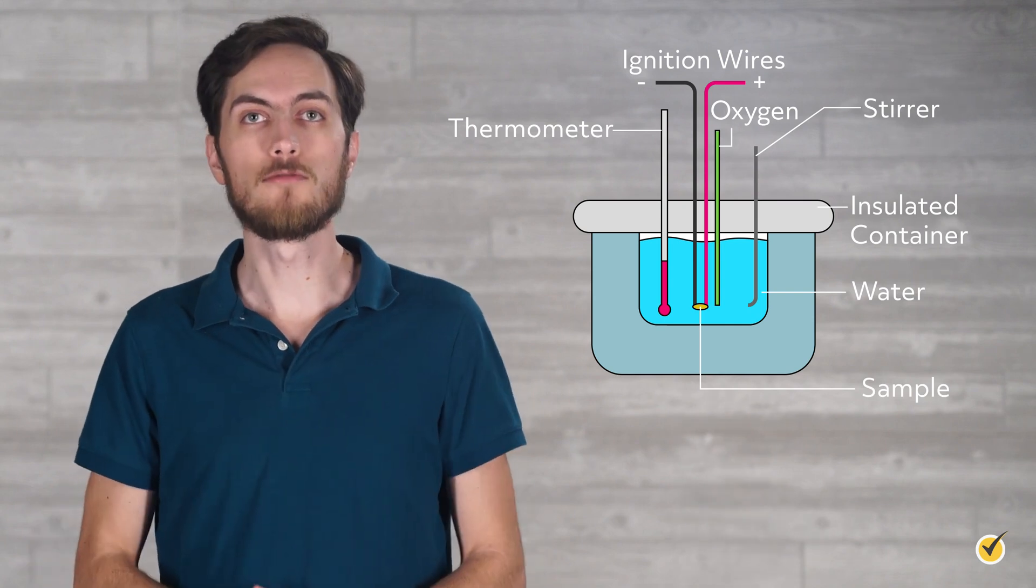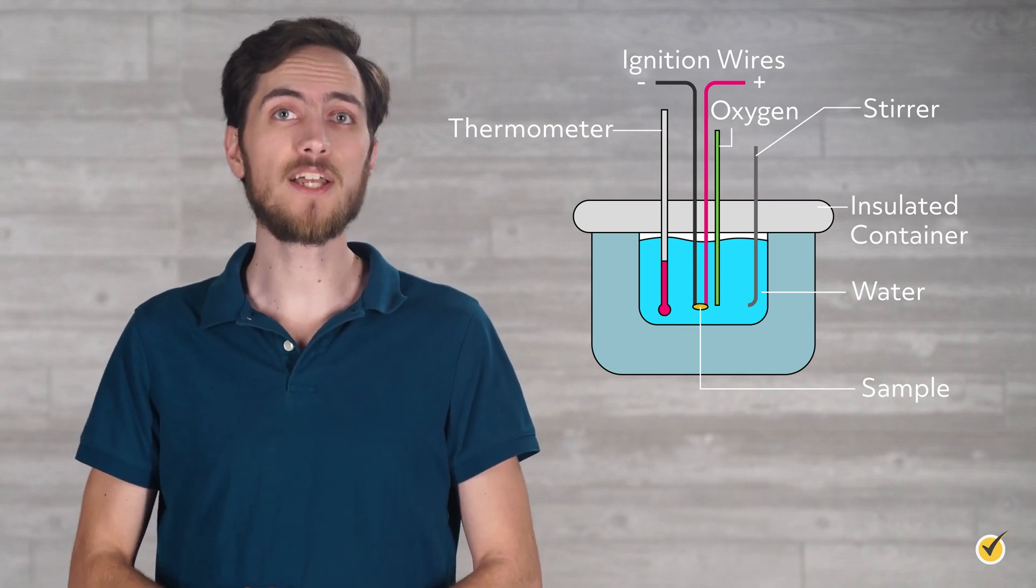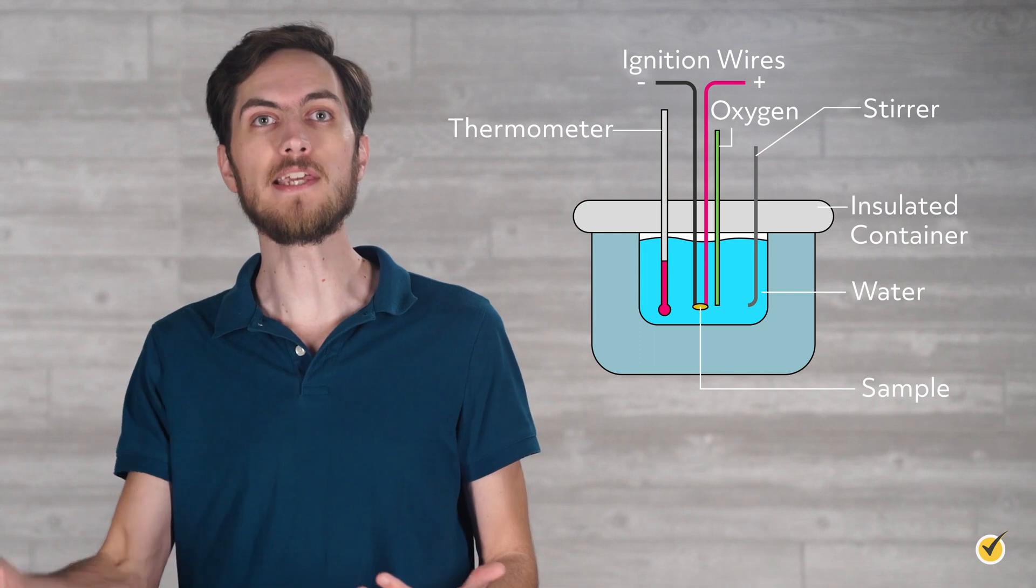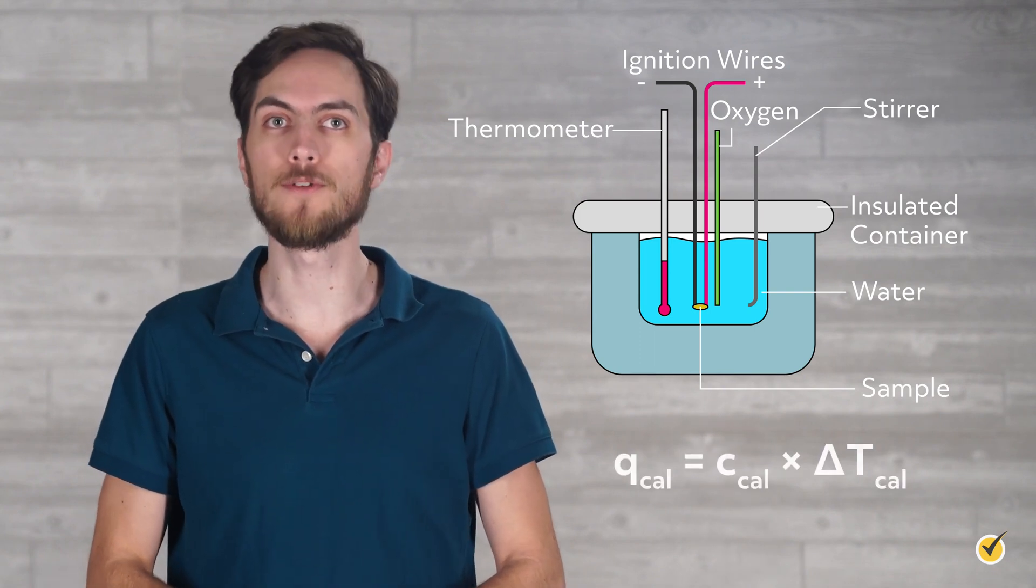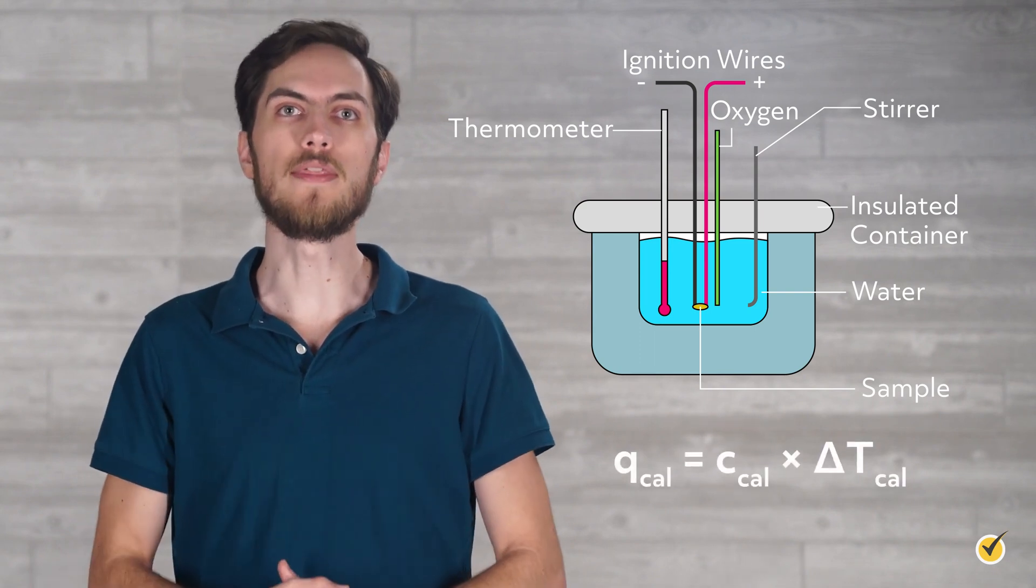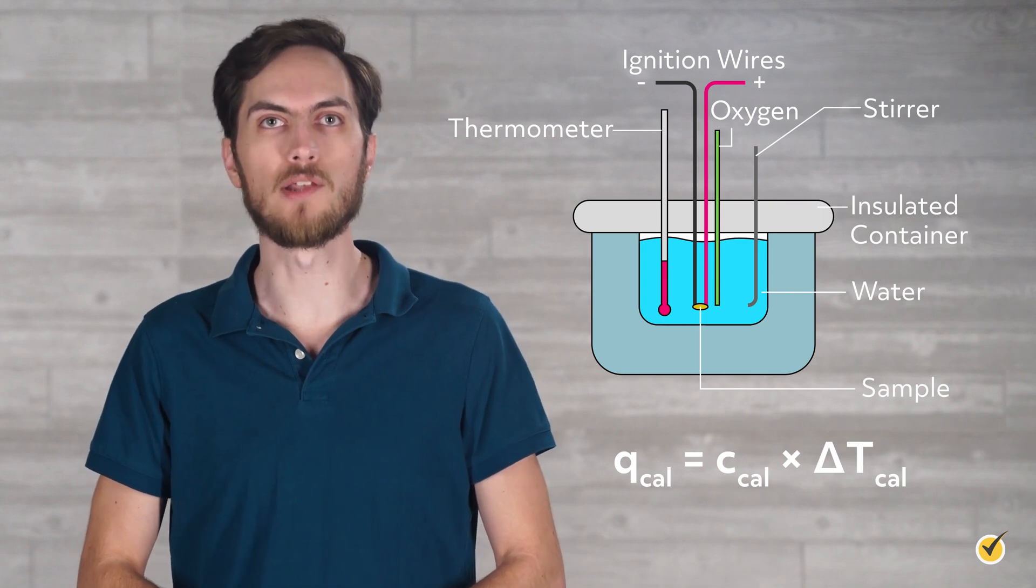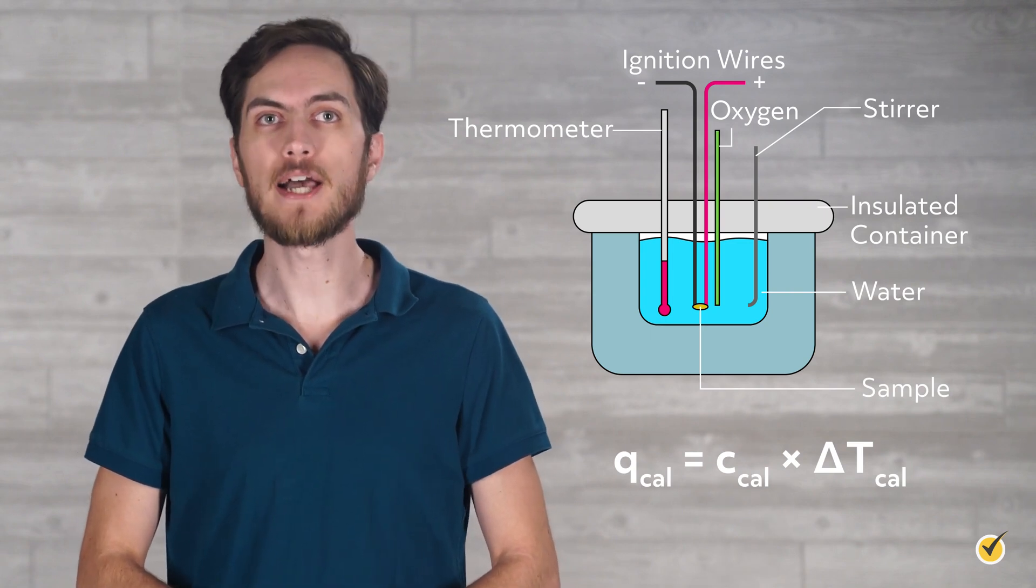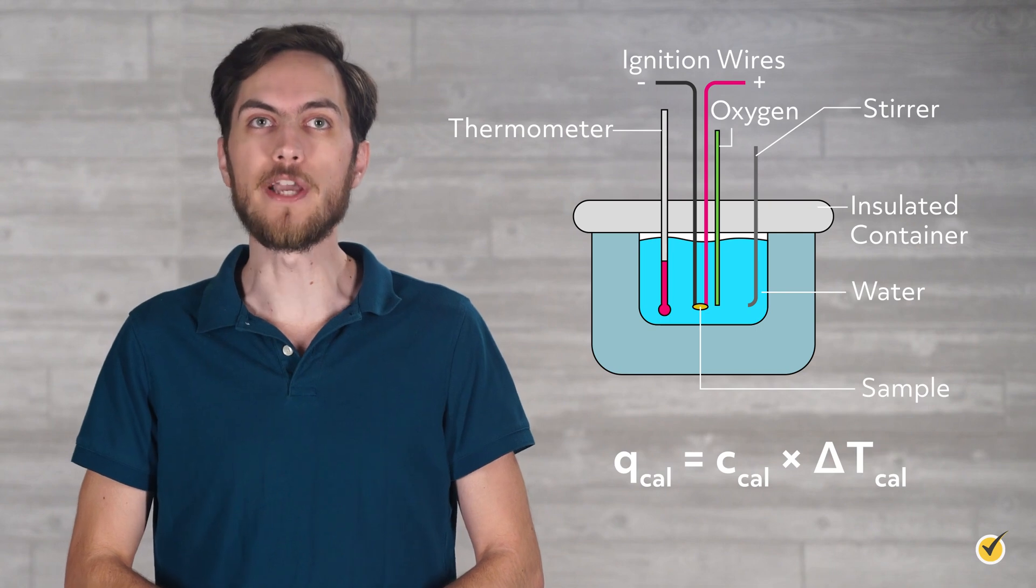So when the temperature of the calorimeter increases, we can equate that to an amount of heat absorbed or released using the calorimeter's heat capacity in this equation. q, the heat absorbed or released by the calorimeter, is equal to the heat capacity of the calorimeter times the change in temperature.